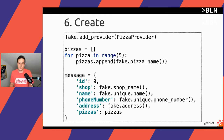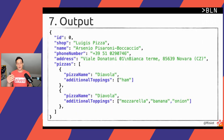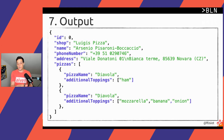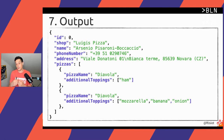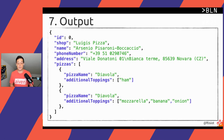If everything works well, you will end up with something like this: the order ID, the shop name receiving the order is Luigi's Pizza, the name of the person is Arsenio Pizzaroni Boccaccio — an Italian one — and we have to deliver the pizza to Novara. I didn't only create an extension for fake pizza names, but also added an extension for fake additional toppings, letting Arsenio order a nice Diavola pizza with a banana topping on top.